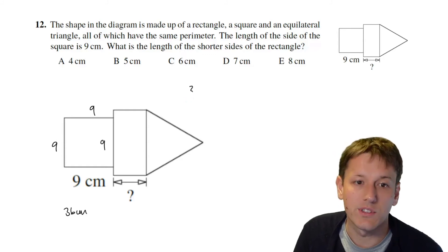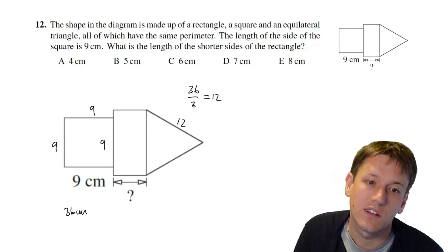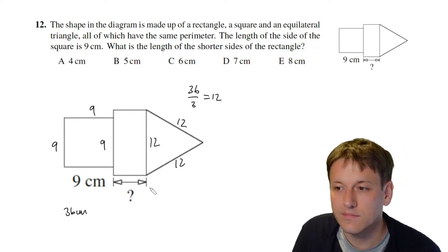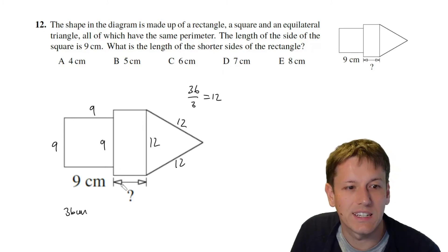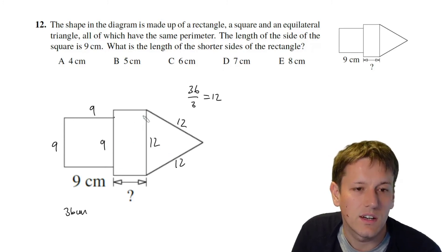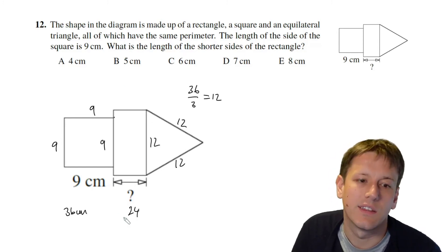It's got three equal sides so 36 divided by 3 is 12 and each of the sides of the triangle must be 12 and we also know that the perimeter of the rectangle is 36.